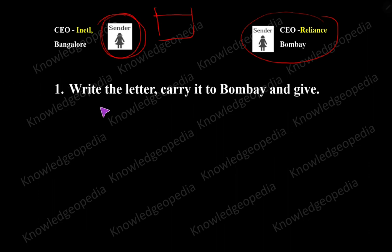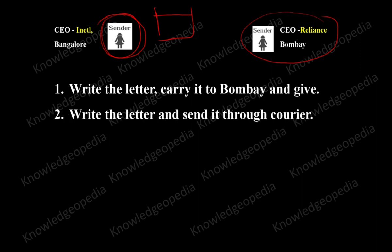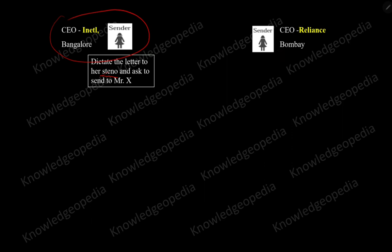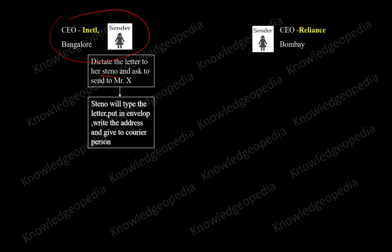One option is that Nibriti Rai will write the letter, carry it to Mumbai and give it to the Reliance CEO. The other option is to write the letter and send it through courier. Our objective is to send the hard copy. Definitely the preferable option is through courier. So the CEO of Intel will call her office assistant, dictate the letter to her, and ask her to send it to Mr. X, who is the CEO of Reliance. The Steno will type the letter, put it into an envelope, write the address, and hand it over to the courier person who comes to the office.